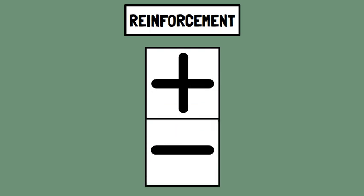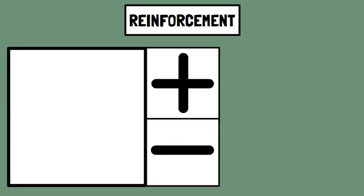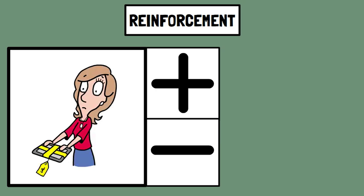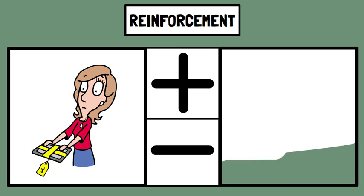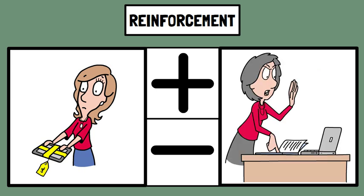Reinforcement, both positive and negative, can strengthen the likelihood of observational learning. If an observed behavior leads to positive outcomes or rewards, the observer is more likely to imitate that behavior. Conversely, if negative consequences follow a behavior, observational learning may be inhibited.